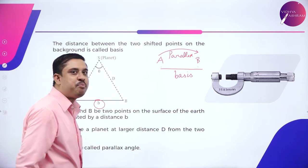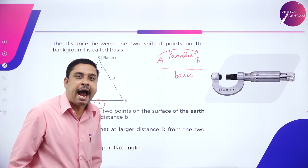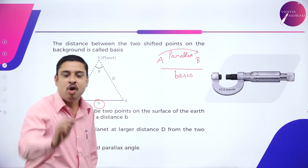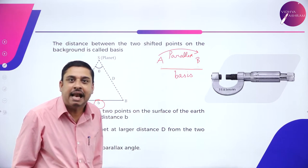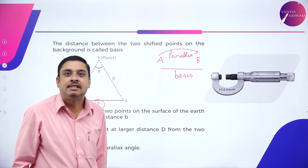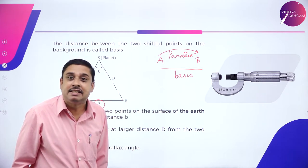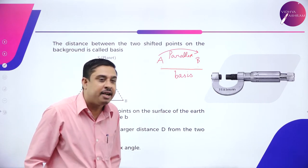So, small b represents the distance between A and B. Again, what is A? C.V. Raman lab in India. And B is the point which is NASA at U.S.